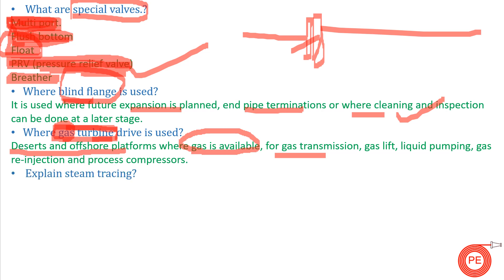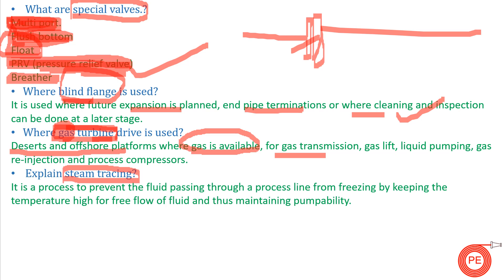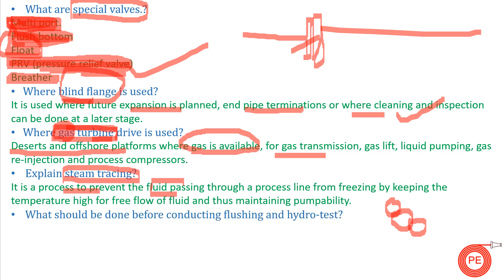The next question is: explain steam tracing. Steam tracing is a common practice in cold areas or where fluids may freeze at room temperature. To prevent solidification and maintain the pumpability and conveyability of the fluid, a steam line is provided around the pipe so the fluid remains in the liquid state.